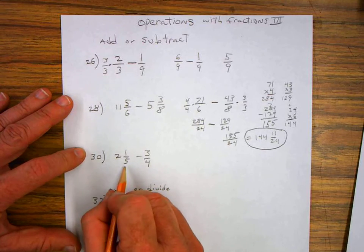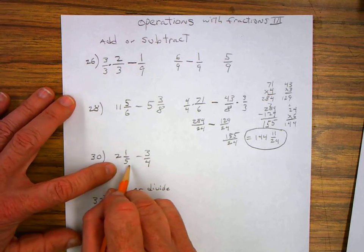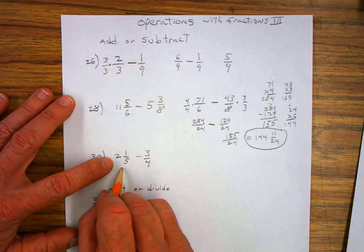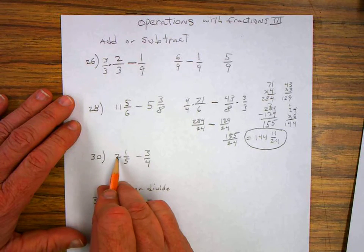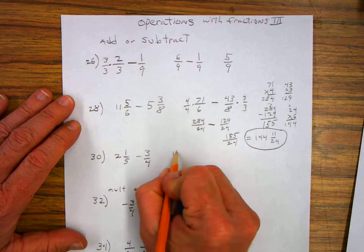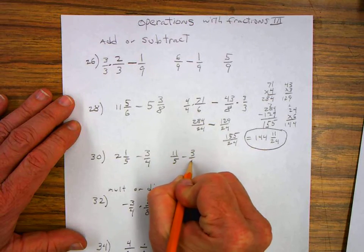Number thirty. Again, I got a mixed number and a fraction. I want to convert this mixed number into an improper fraction. Five times two is ten plus one makes eleven over five minus three over four.